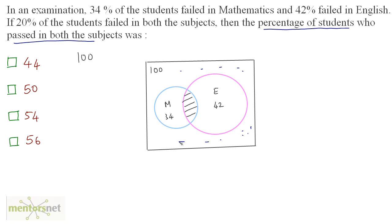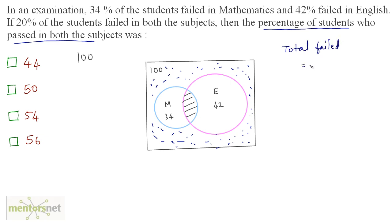We have to calculate the percentage of students who passed in both subjects. Treat this like a problem of area — calculate the blue-dotted area. The total number of students who failed equals M plus E. But when you do that, you count the overlapping area twice — the students who failed in both maths and English. So you subtract that area once. That value is 20, since 20% of the students failed in both subjects.